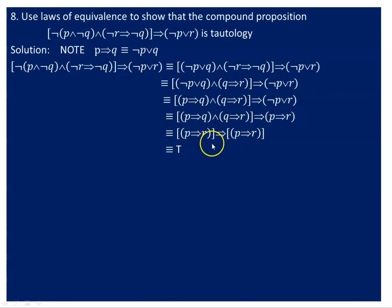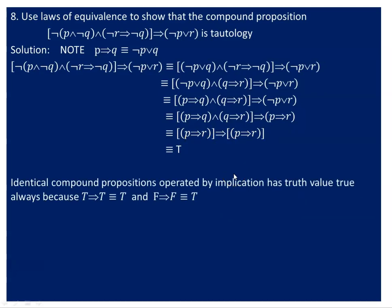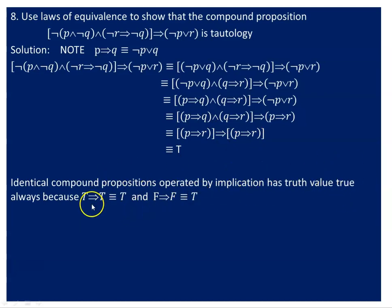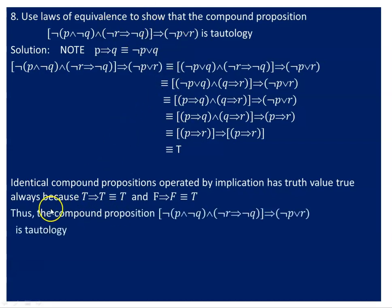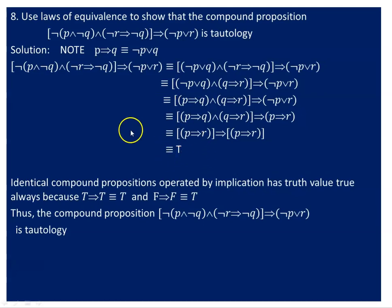To evaluate, we look at the truth values. Identical compound propositions operated by implication: true implies true is true, false implies false is true. So the compound proposition has all true values — true, true, true, true. With no false outputs, we call that compound proposition a tautology.